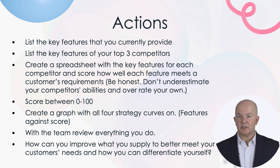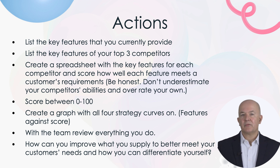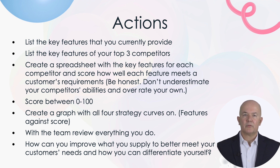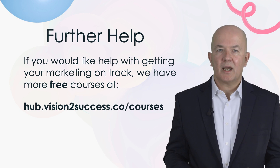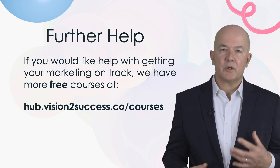Now let's run through the full checklist. List all the key features that you currently provide. List the key features of your top three competitors. Create a spreadsheet with the key features for yourself and each competitor and assign a score between 1 and 100 of how well each feature meets a customer's requirements. Create a graph with all four strategy curves on. Review all this information with your team. Finally, use this information to identify how you can improve what you supply to better meet your customers' needs and differentiate yourself in the process. If you would like help with getting your marketing on track, we have more free courses at hub.vision2.success.co/courses.